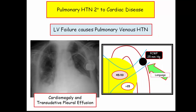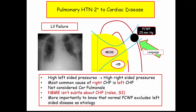Pulmonary hypertension secondary to cardiac disease: passive congestion can also cause pulmonary venous hypertension. We have a chest x-ray with a large heart and right-sided effusion. The effusion is secondary to congestive heart failure, so it would be a transudate. The pulmonary capillary wedge pressure is elevated at 25 millimeters of mercury. The high left heart pressures are passively transmitted back to the right heart, and the high left-sided pressures would be clinically manifest by rales or crackles.